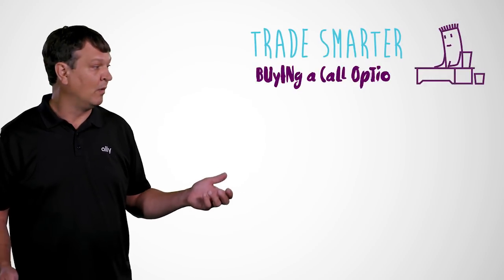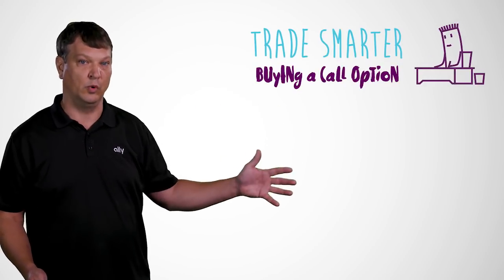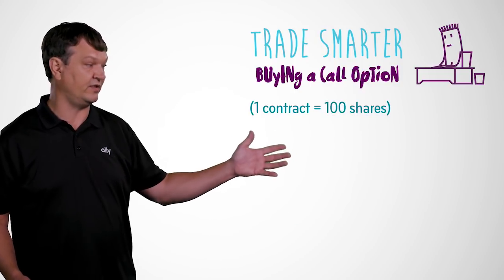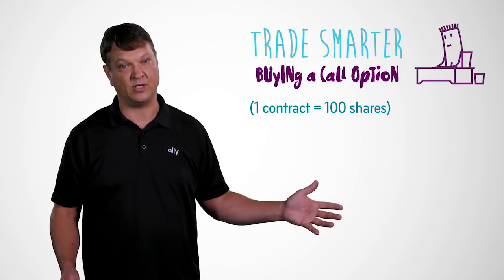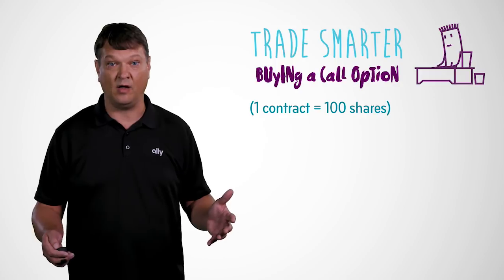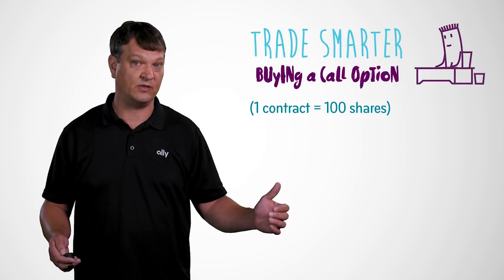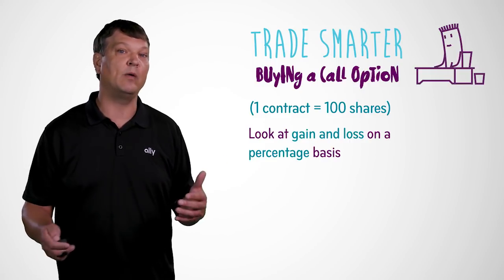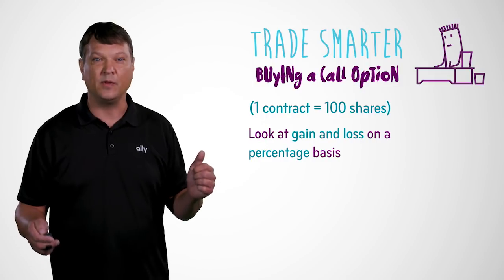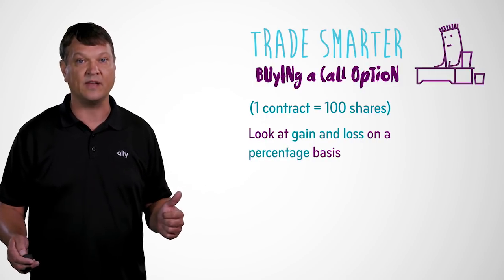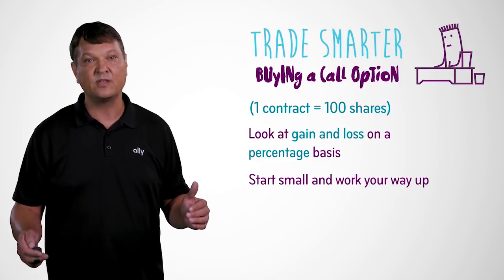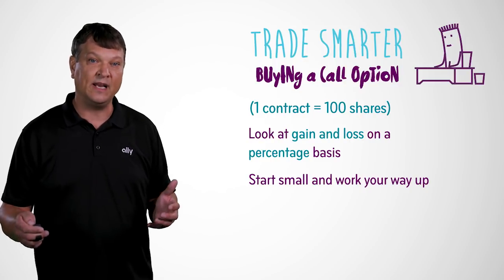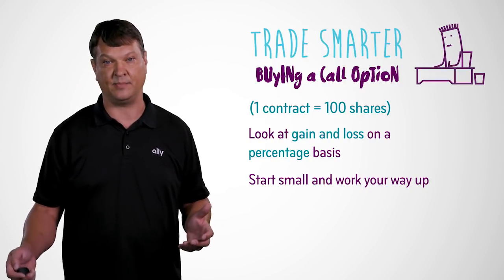So how can we trade smarter? The general rule for beginning option traders should be: if you usually trade 100 shares of stock, you should start out by buying one option contract. The capital involved in buying one option contract is going to be your total risk on that trade. Start small, start with a little bit of capital. You could buy two option contracts, but ease your way into it and get a handle of the leverage factor involved in option trading.